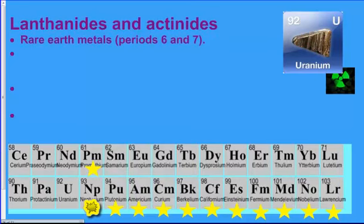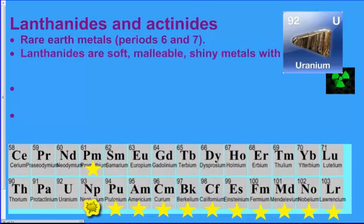Because they are rare earth metals meaning it took us a while to find them. But they also have a lot of man-made elements such as the ones that are starred on the bottom. Those are all going to be man-made elements. They're going to be soft and malleable like typical metals. Shiny with some conductivity. They conduct electricity and probably thermal conductivity because they are metals.